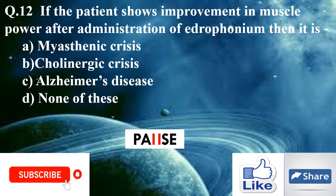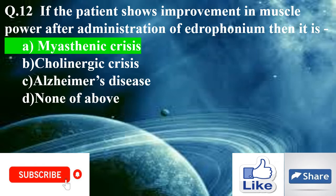Question twelve: If the patient shows improvement in muscle power after administration of edrophonium, then it is — option A: myasthenic crisis, option B: cholinergic crisis, option C: Alzheimer's disease, option D: none of these. The right answer is option A: myasthenic crisis.